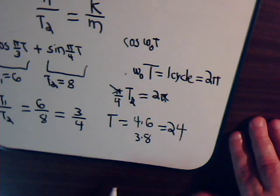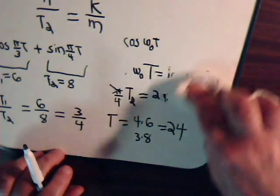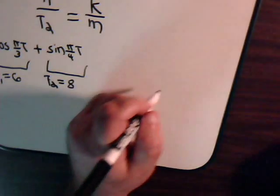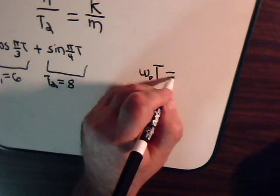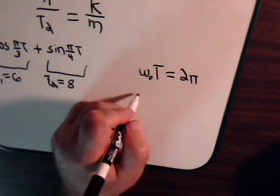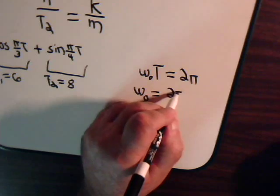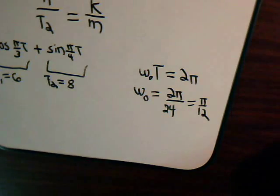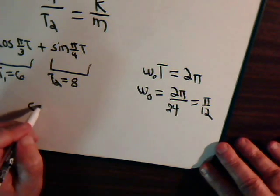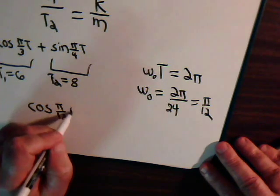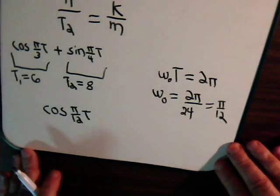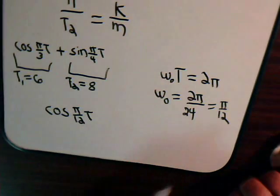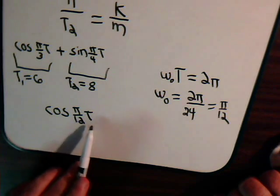So when we add these two together, this function has a period of six. This has a period of eight. The resulting function has a period of 24. So how would we write it so it looks like this? Omega T equals two pi. T equals 24. So omega naught equals two pi divided by 24. That equals pi over 12. So our resulting function then would be the cosine of pi over 12 times t. So we add these two functions together. This is a period of six. This has a period of eight. The resulting function then has a period of 24 and can be written like this.